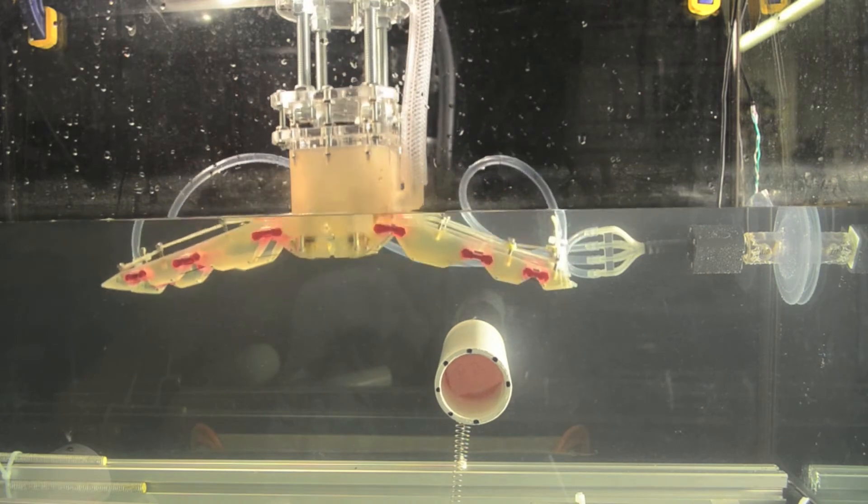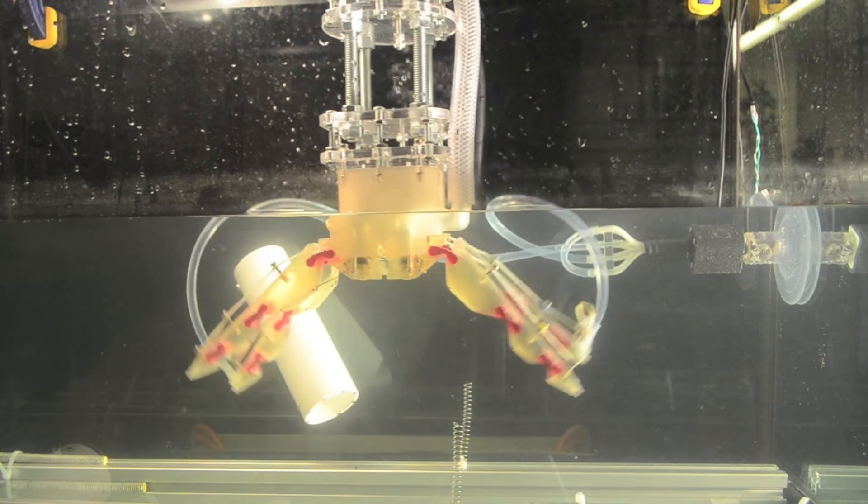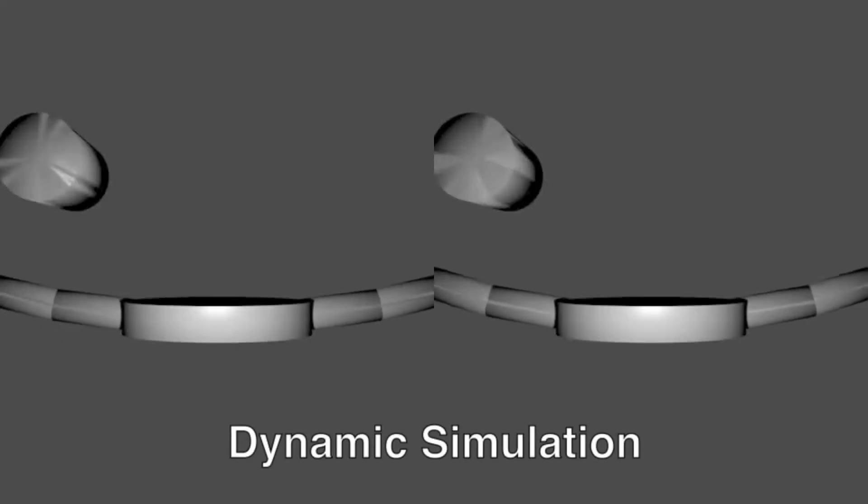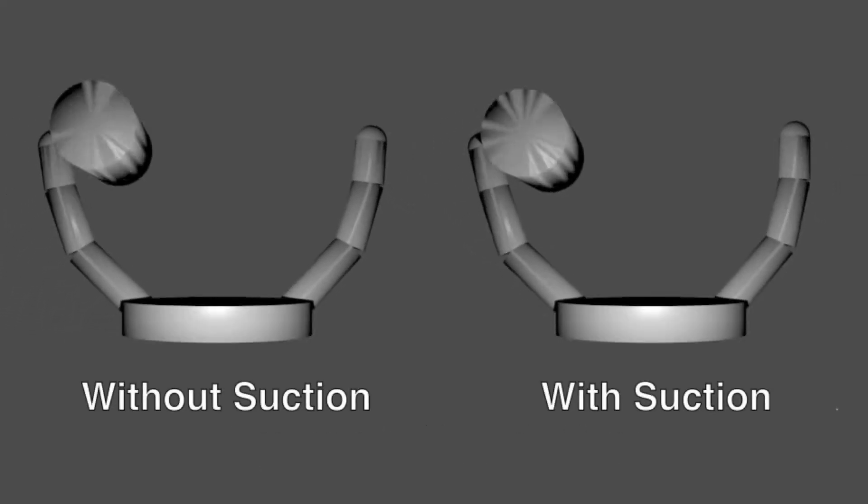Although suction on the current prototype does not improve grasping for more massive high-friction objects, simulations confirm that changing suction position and flow rate slightly can improve grasp region significantly.